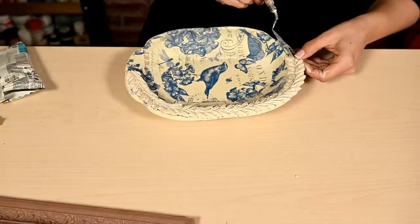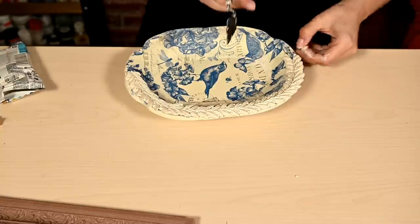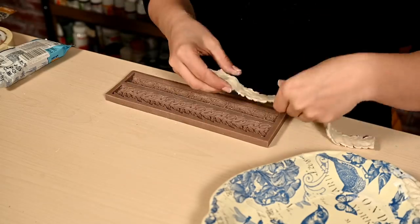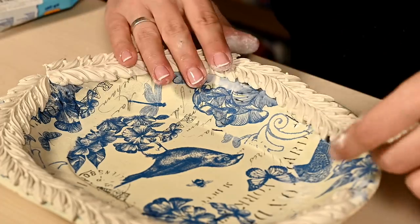I'm applying Mod Podge along the edge of the dish and attaching the finished cast to it. I'm cutting off a couple of leaves at the end of the cast to get a kind of a finished tip like on a real garland. Similarly I'm making the second garland and attaching it on the second half of the dish.